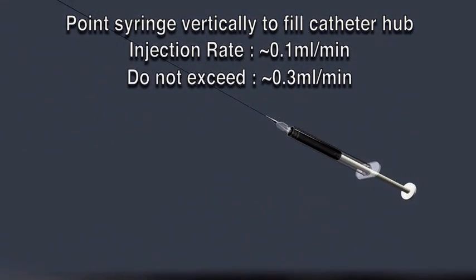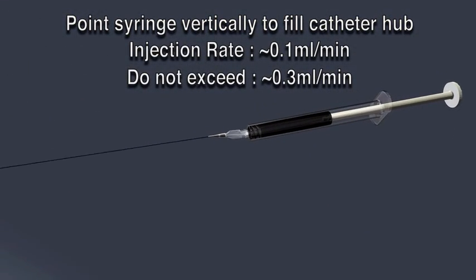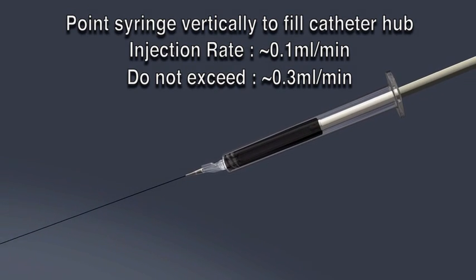Once the Onyx passes through the hub, hold the syringe in a more comfortable position and continue injecting Onyx at the specified rate.